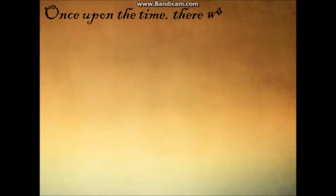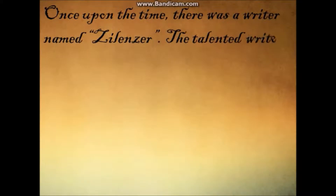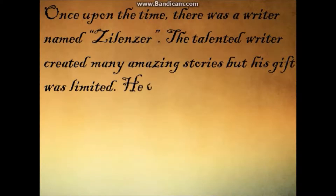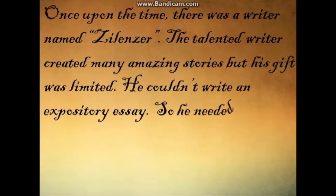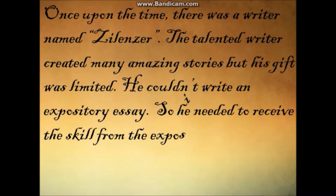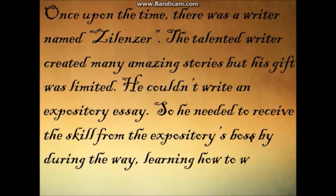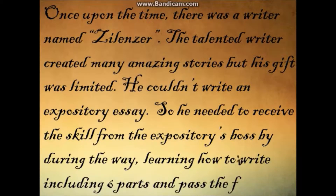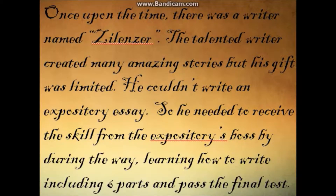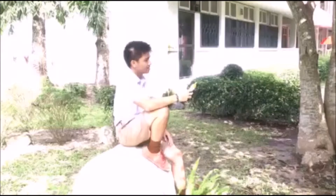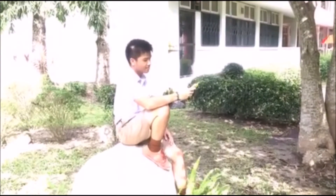Once upon a time, there was a writer named Silencer. The talented writer created many amazing stories, but his skills were limited. He couldn't write an expository essay, so he needed to receive the skills from the expository boss by doing the way — learning how to write including six words and passing the final test.